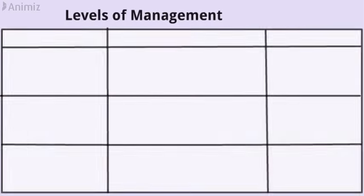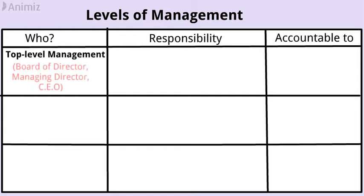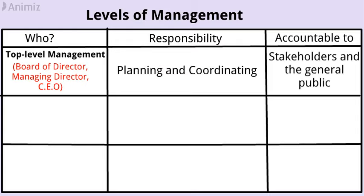Levels of management. There are three levels of management. 1. Managerial or top-level management. Top level of management consists of the board of directors, managing director, and CEO. Their main responsibility is planning and coordinating. Top-level managers are accountable to the stakeholders and the general public.